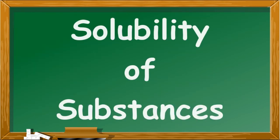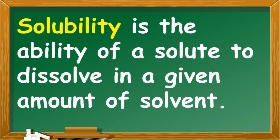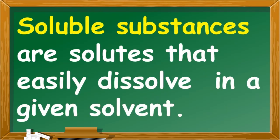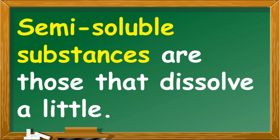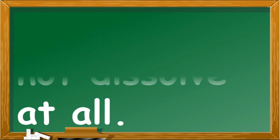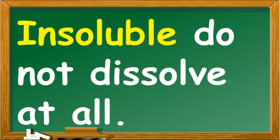Solubility of substances. Solubility is the ability of a solute to dissolve in a given amount of solvent. Soluble substances are those that dissolve easily. Insoluble substances do not dissolve at all.